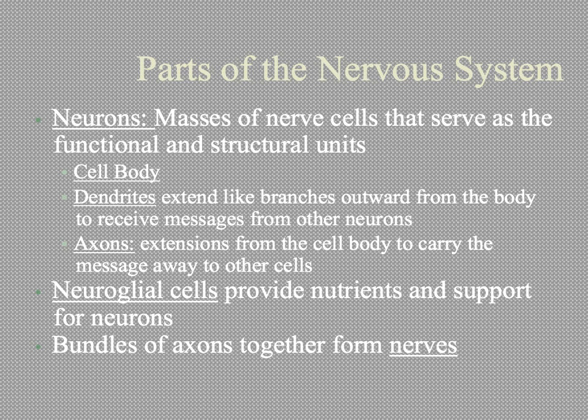The first thing you need to know is that nerve cells have a special name that's different from other kinds of cells, and that name is neuron. Anytime you see the root 'neur' — N-E-U-R — we're dealing with the nervous system, usually the brain or the cells of the nervous system themselves.